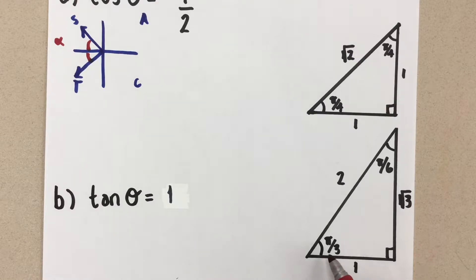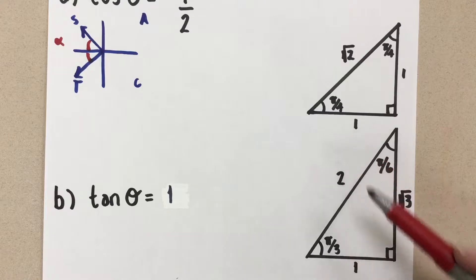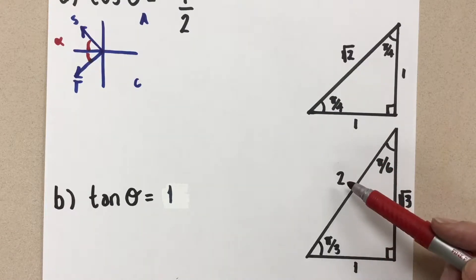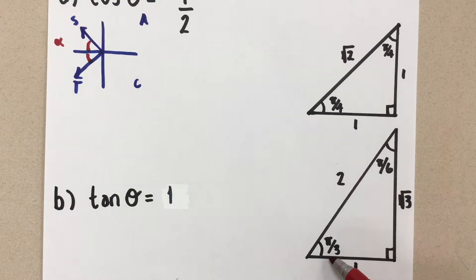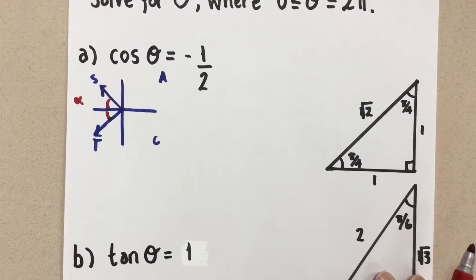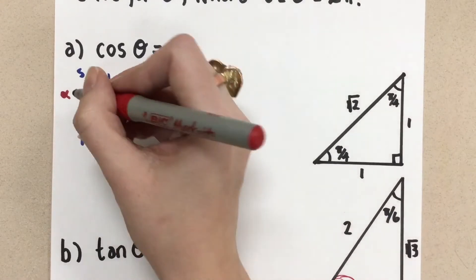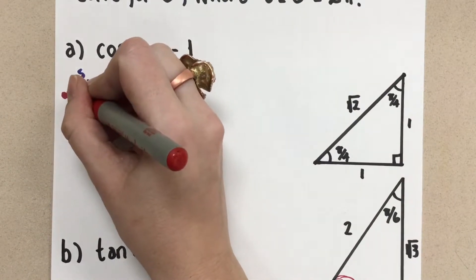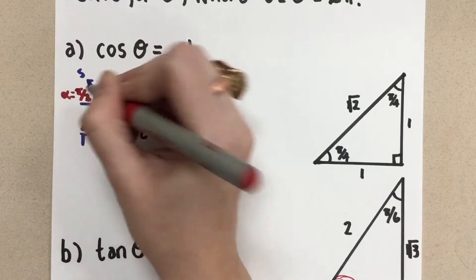So let's look at π over three. Cosine of π over three, adjacent over hypotenuse gives us one over two. So this is the angle I'm looking at right now, this π over three. So we're going to come back to our Cartesian plane, and I'm going to put π over three as the related acute angle.